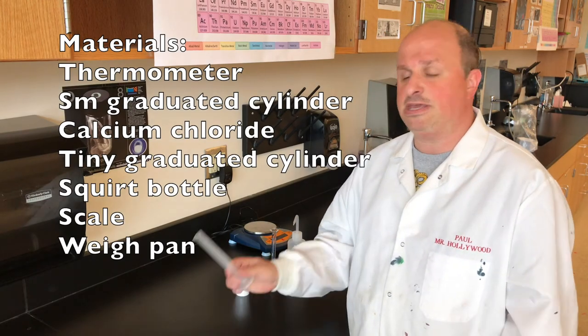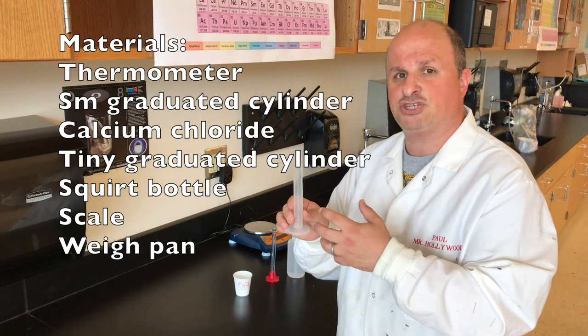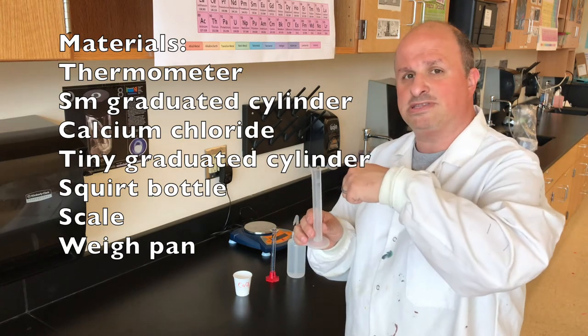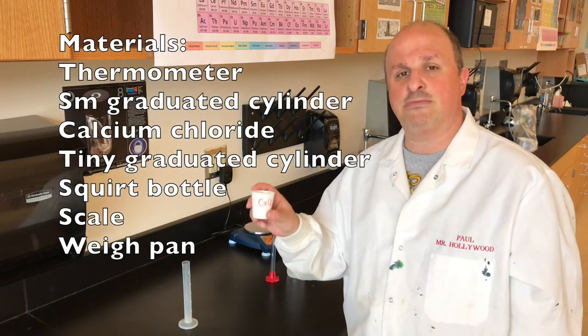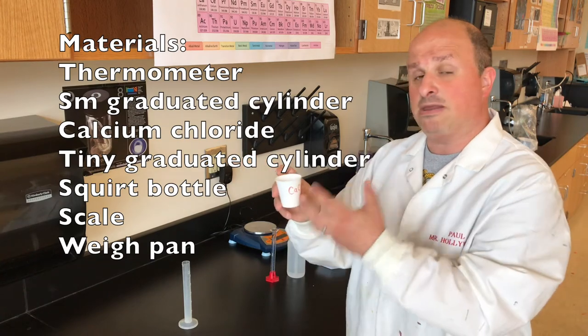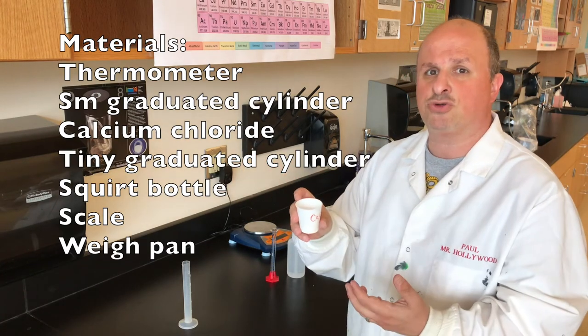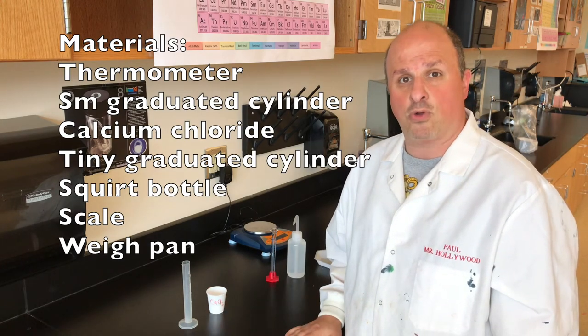The second material you're going to need is a small graduated cylinder. We're going to use this to have the reaction take place with the thermometer inside so it can measure the temperature change. Third is calcium chloride, which is a white flaky powder that you're going to get a limited amount of. But you can run as many trials as you can with the time and supplies that you are given.